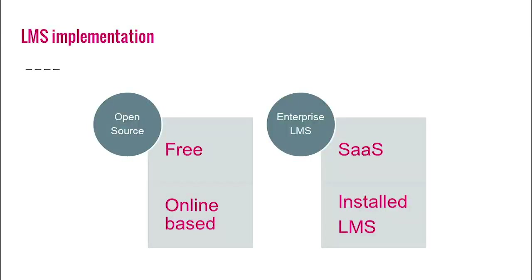Basically, the learning management system type is divided into two categories. One is Software as a Service, where the vendor delivers support services and stores all data in the cloud. The second is the installed LMS, which is hosted locally on the purchasing organization's server, making it easy to customize all aspects. Unlike SaaS LMS, it is up to the organization's internal IT department to maintain the e-learning platform and make necessary upgrades.